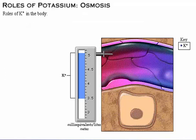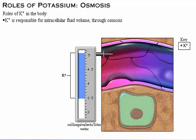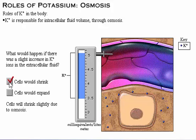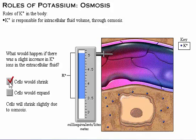Let's look at the roles of potassium in the body. As the major intracellular positive ion, potassium is responsible for intracellular fluid volume through osmosis. If there is a slight increase in potassium ions in the extracellular fluid, cells will shrink slightly due to osmosis.